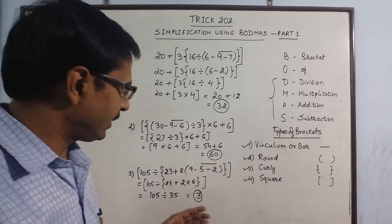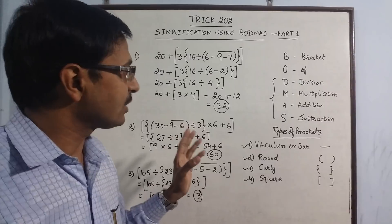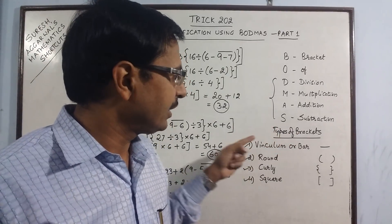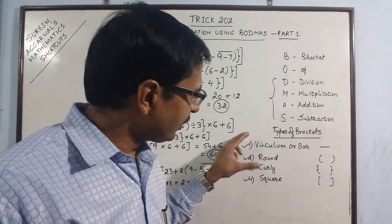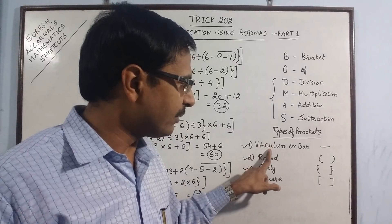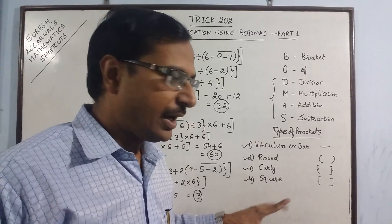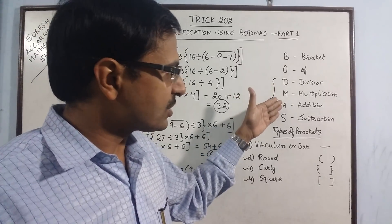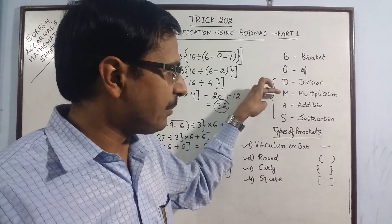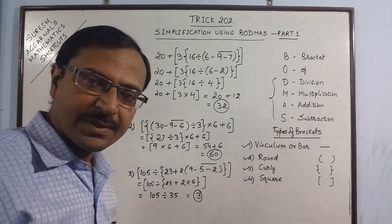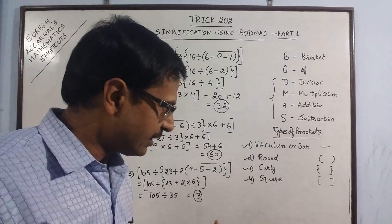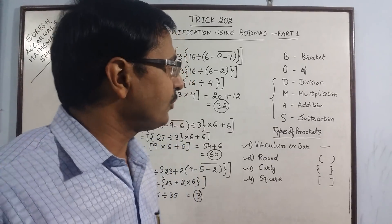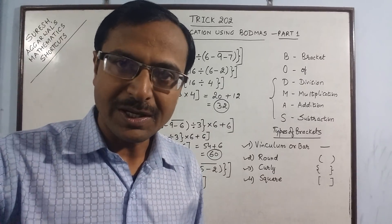You can solve more problems related to simplification using BODMAS. Remember: when there are both operations and brackets, first give priority to brackets — removing them one by one: vinculum, then round, then curly, then square. In between, whenever you have operations like multiplication and addition, assign priority using the BODMAS sequence. These are basic rules, and once you know them, we can solve more difficult problems in part 2 of this video. Keep viewing and keep sharing!